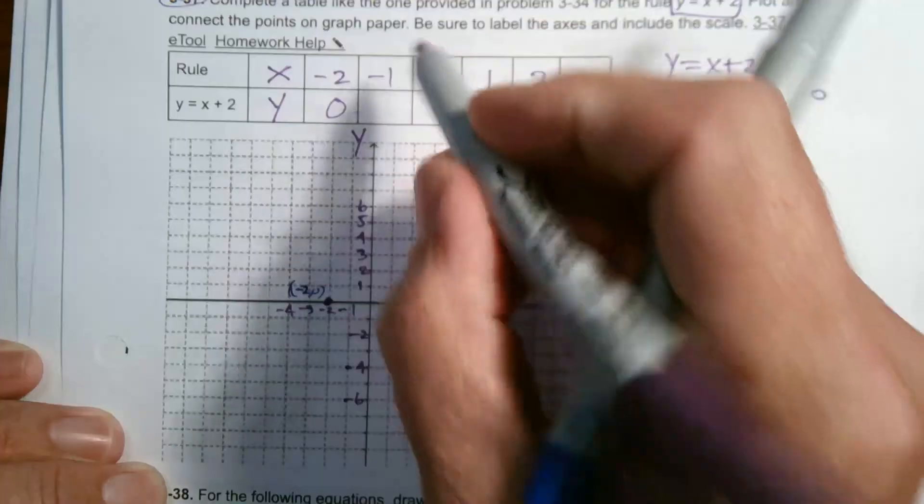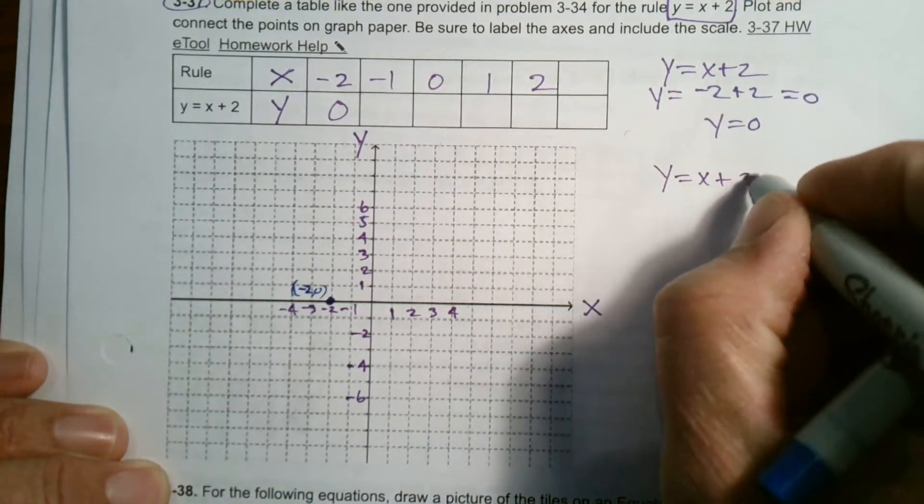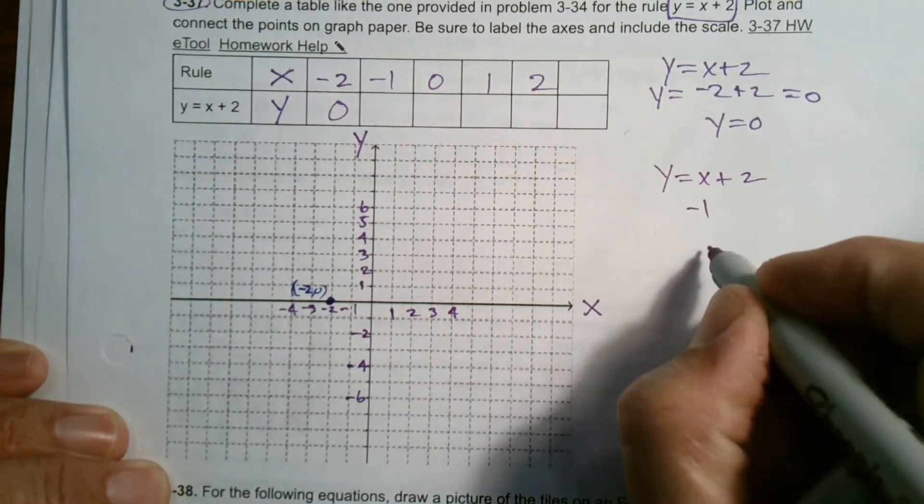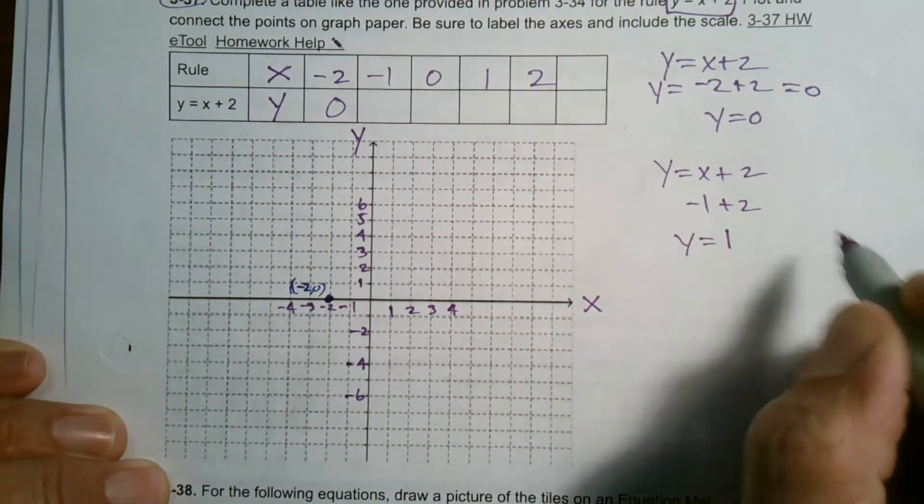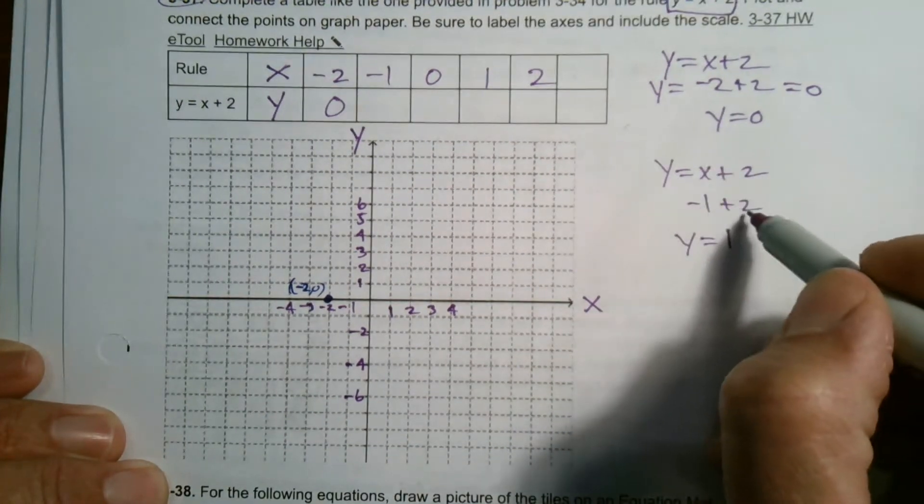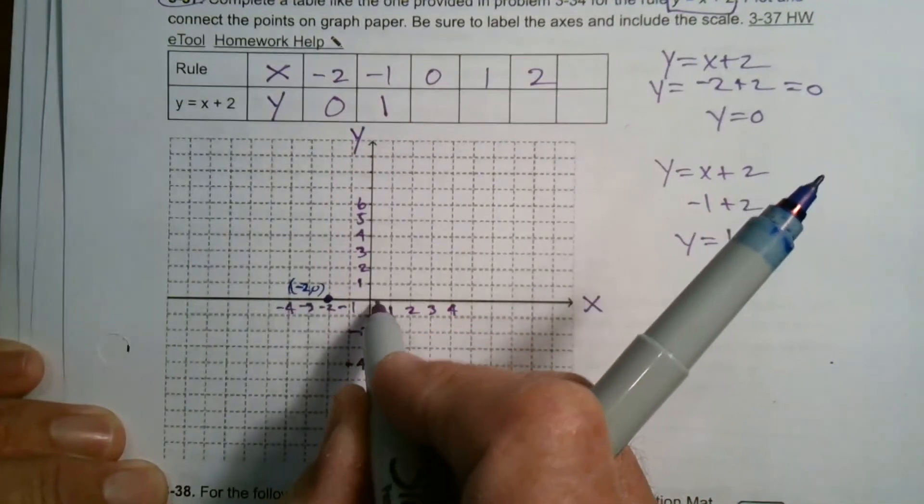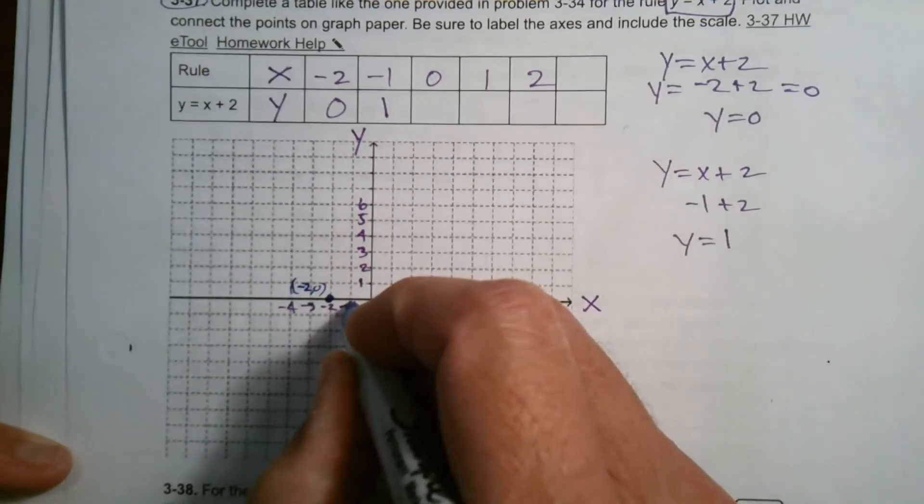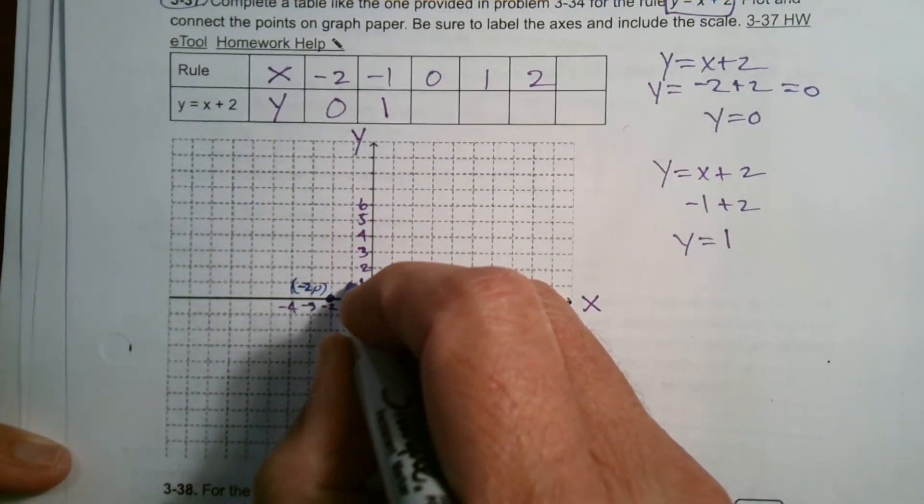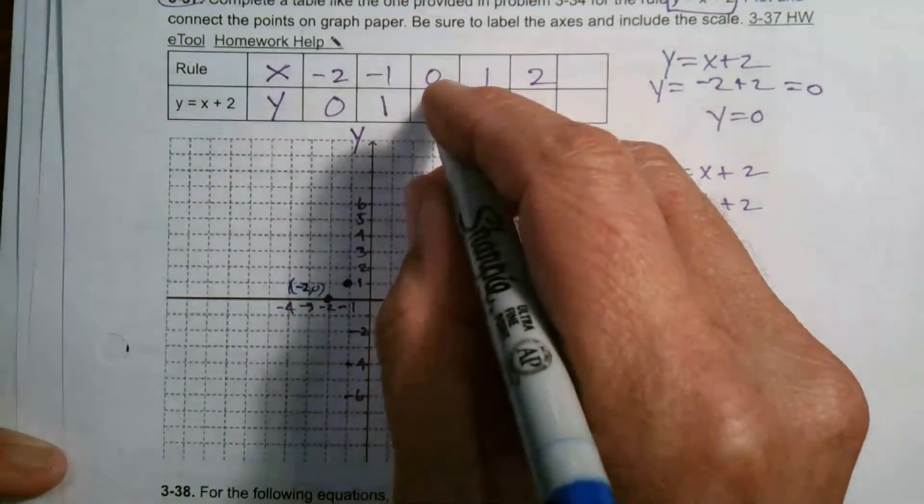So let's figure out what happens when I put negative 1 in. So y equals x plus 2, in place of the x I put negative 1. So now I have negative 1 plus 2. When I add those, I get y equals 1. So when x equals negative 1, y equals 1. So I put that in. So at x equals negative 1, y is positive 1. So that goes right here.